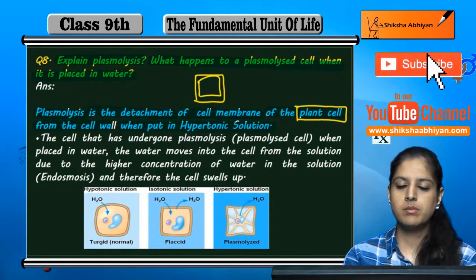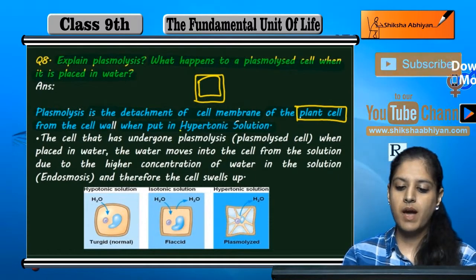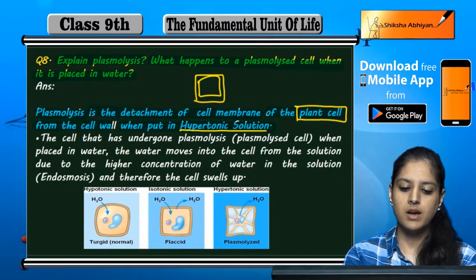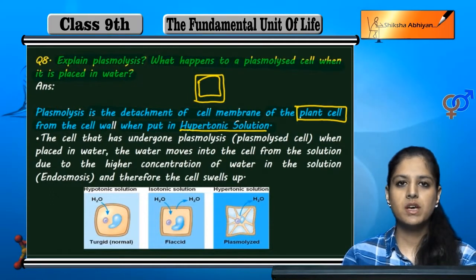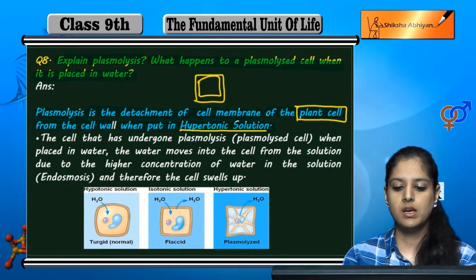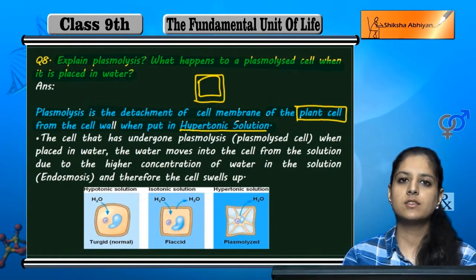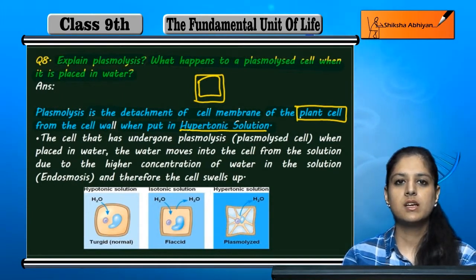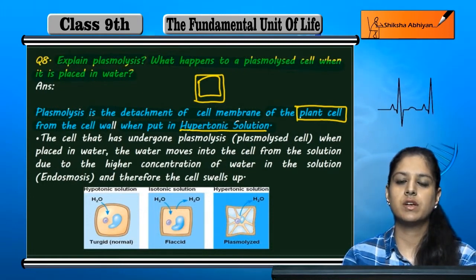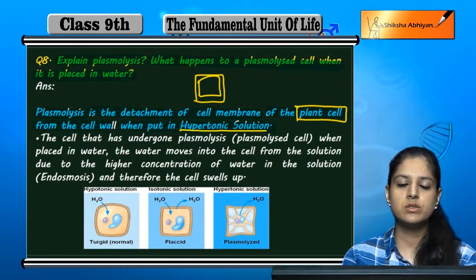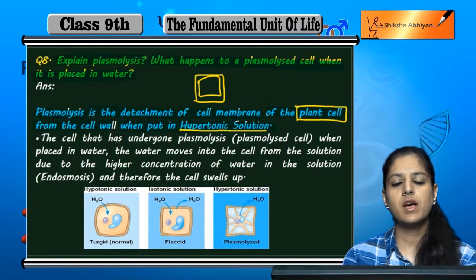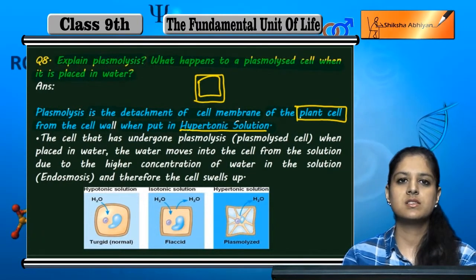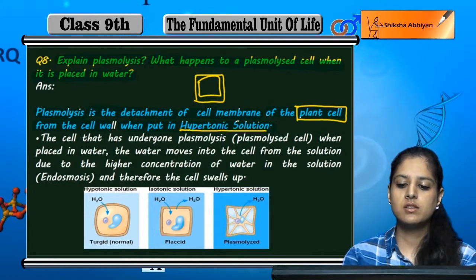The cell wall and the cell membrane are both present. When we keep a plant cell in a hypertonic solution, the solute concentration outside is more and the concentration inside is less. So water transfers from inside to outside. The inside portion is shrinking, and this is what happens during plasmolysis.